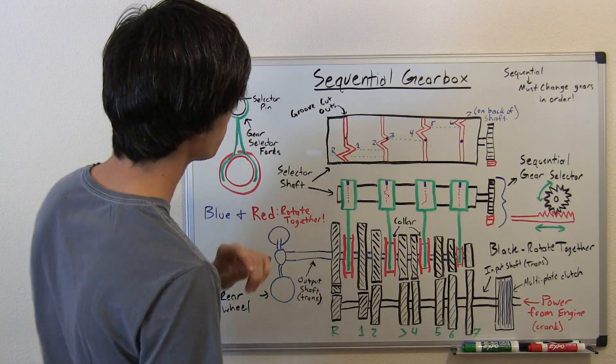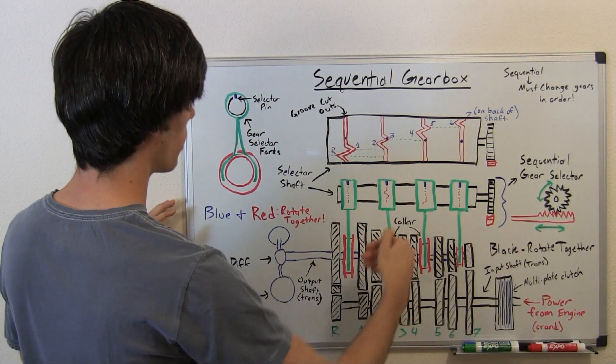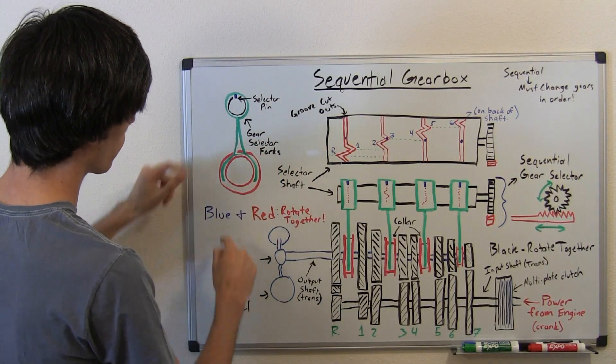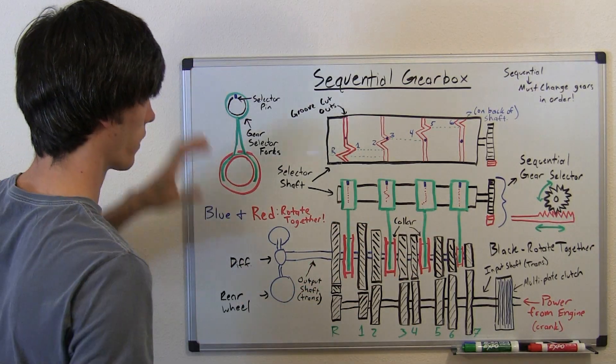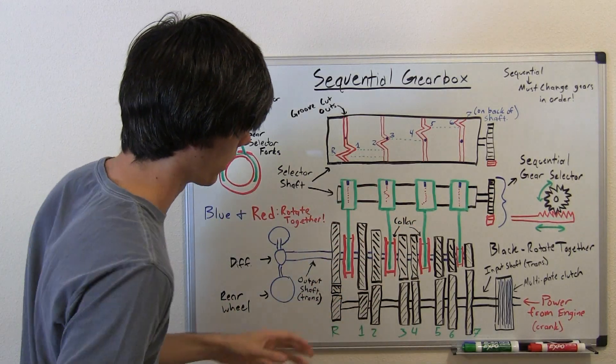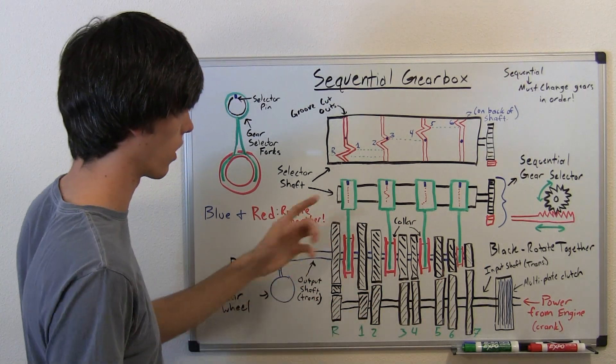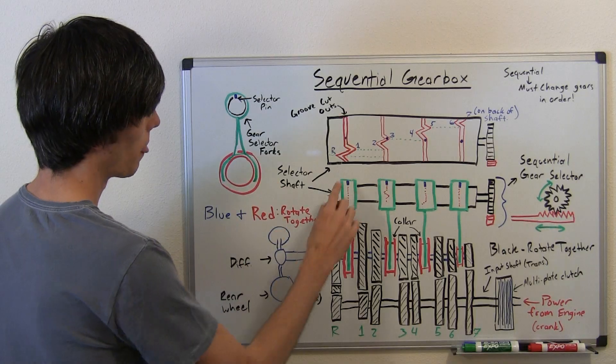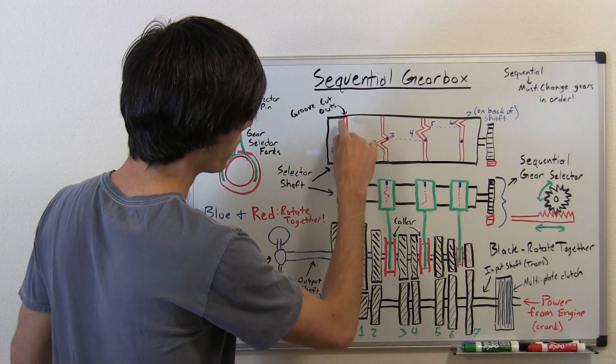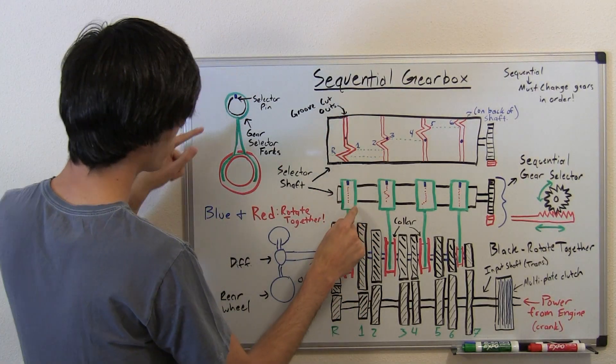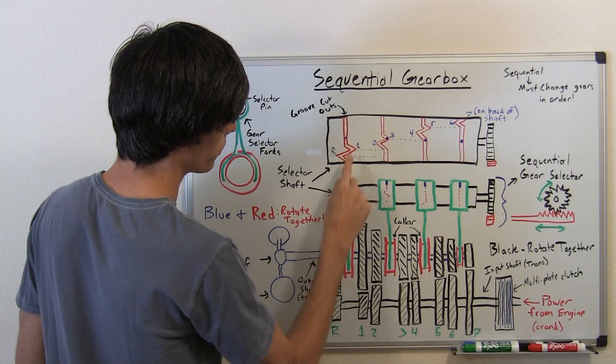Now how does that work? Well, each of these selector forks, these green selector forks - and if you want to look at it from the front view, this is your collar here, and then in green is your selector fork. So each one of these looks like this if you're looking straight on. This is a side view. So all of this is a bunch of cylinders basically. When I say a bunch of cylinders, I'm talking about all these gears and shafts and collars and everything like that. So you've got this gear selector shaft, and it has this groove that's cut out on it. In each of these selector forks there's going to be a little pin, and this pin is going to follow this groove.